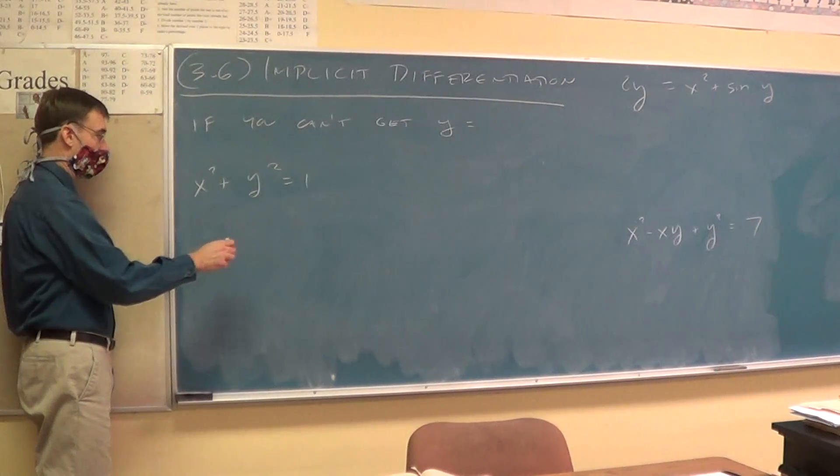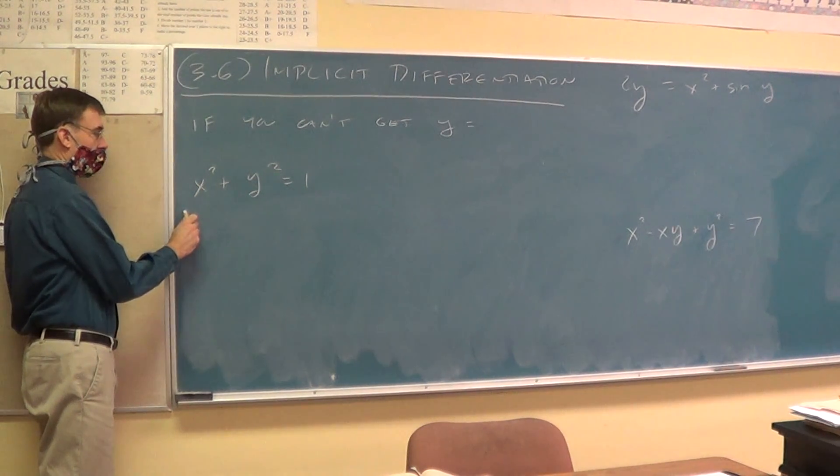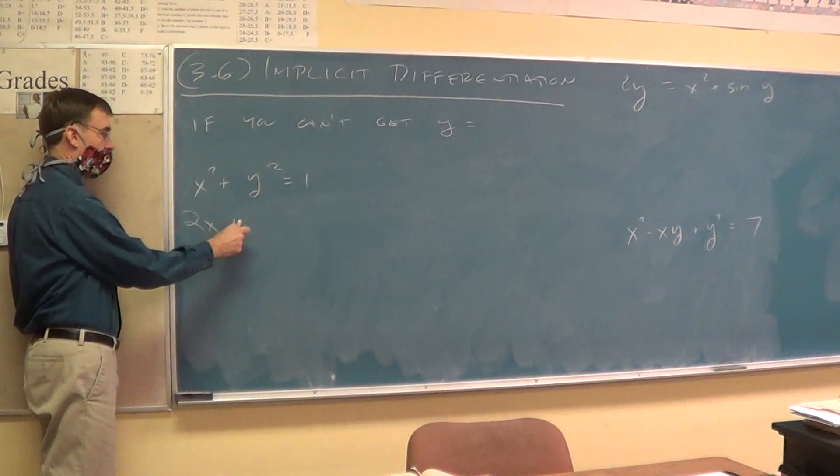Okay, so the derivative of x squared is going to be 2x. And then here's going to be a twist.